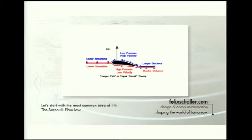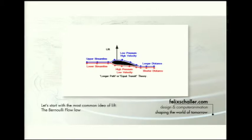Starting with the most popular idea of Bernoulli: it is often argued that two particles — one passing below the wing and one passing above — have to meet again at the trailing edge. By this reasoning, the upper particle has to speed up, but there is no mechanical reason why they should reunite at the end of the wing. This is not a proper explanation and is a bit old-fashioned.